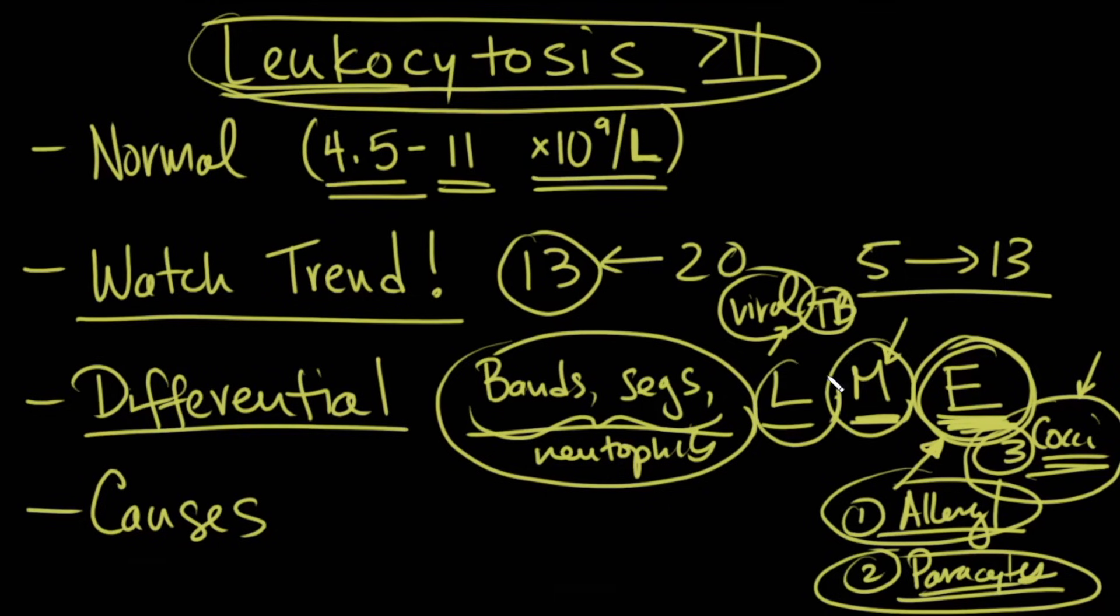But the one that you're probably going to see the most are these bands, segs, neutrophils, and that'll be elevated in pyogenic or bacterial infections. There's usually a range. Typically, what you would see in terms of percent is maybe about 60% will be bands and segs, around 20% or so for lymphocytes, about 5% for monocytes, maybe 2% to 4% for eosinophils.